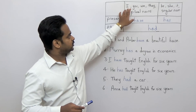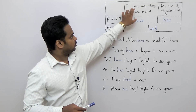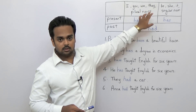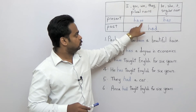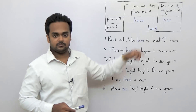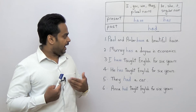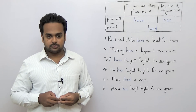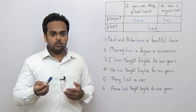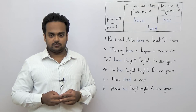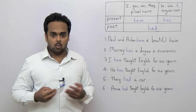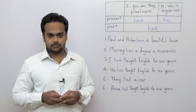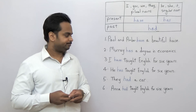If the subject is I, you, we, or they, we still use 'have.' So: 'I have a beautiful house,' 'you have a beautiful house,' 'we have a beautiful house,' etc.